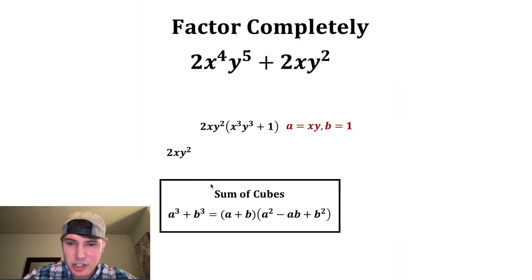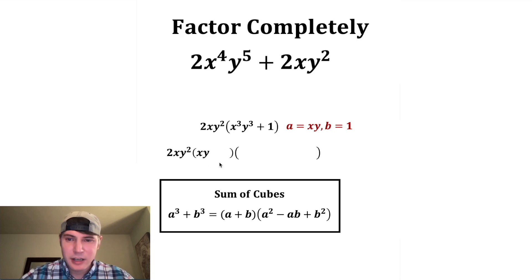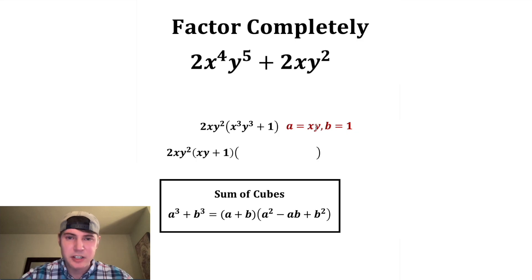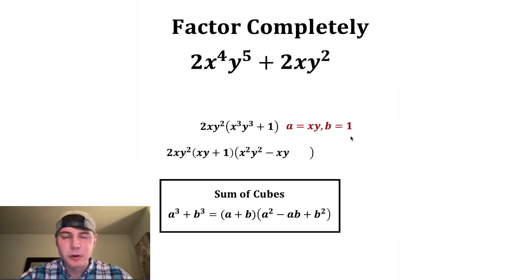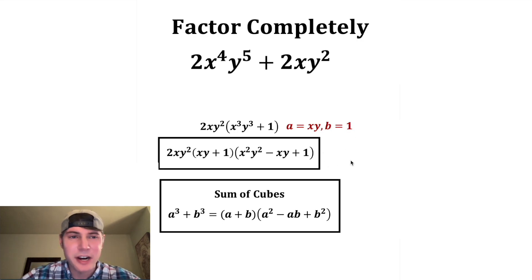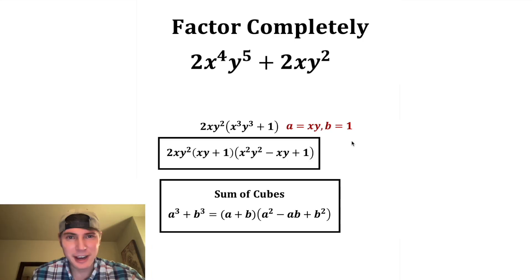This is going to change into two parentheses. We put A in the first spot, which is XY, and then plus B in the next spot, and B was one. And then for A squared, we want to square XY, which would be X squared Y squared — we square each of the terms. And then minus AB, so we subtract these two things multiplied, which is just minus XY. And then plus B squared, but B squared is equal to one, because one squared is one. And this is the answer — we factored completely. How exciting.